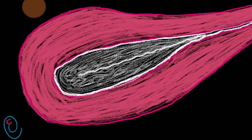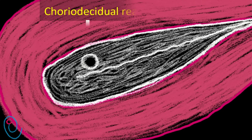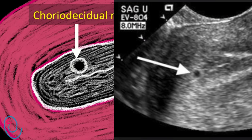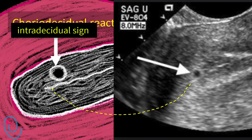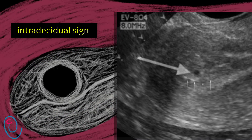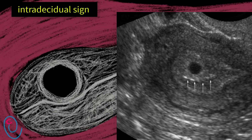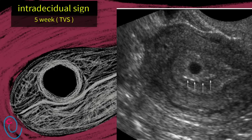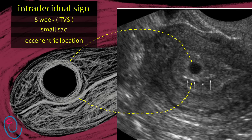Implantation happens to one side of the endometrium. Many changes occur in the endometrium and its name changes to decidua. A chorio-decidual reaction will surround the gestational sac. This is the first sonographic feature of early pregnancy, known as the intra-decidual sign. It appears at about five weeks gestation by transvaginal ultrasound, and looks like a small black cyst, eccentric in location, surrounded by an echogenic white rim.